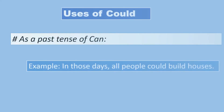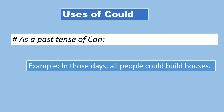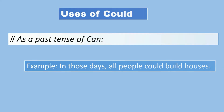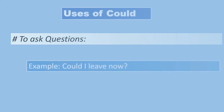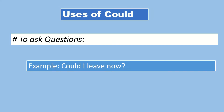Now let's discuss the uses of 'could.' 'Could' is the past tense of 'can.' For example: 'In those days, all people could build houses,' meaning in the past, people had the ability to build houses. 'Could' is also used to ask questions. For example: 'Could I leave now?'